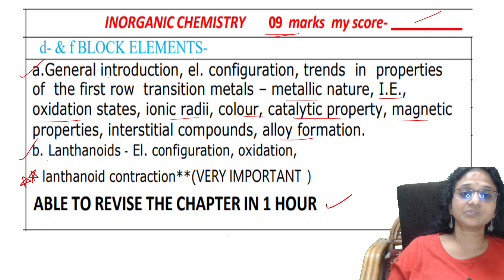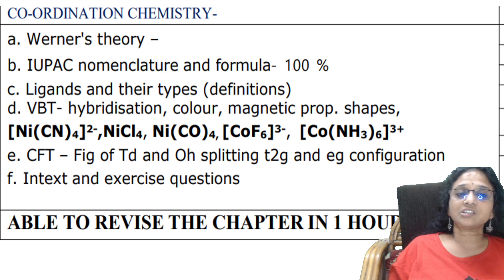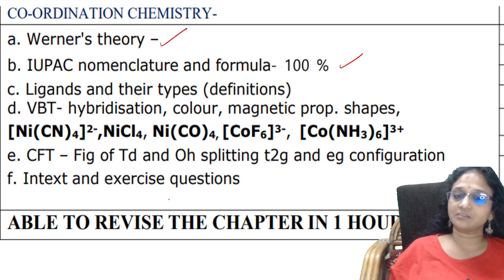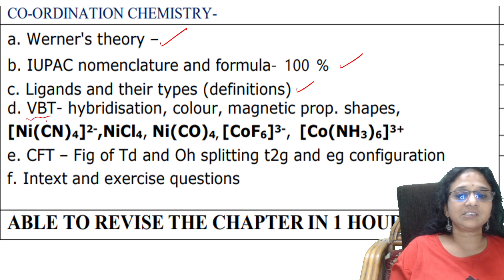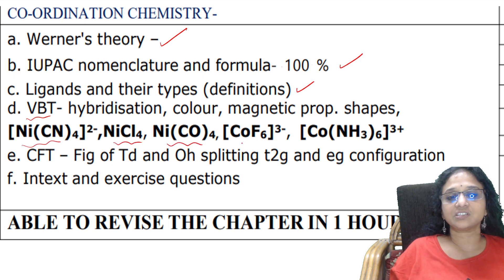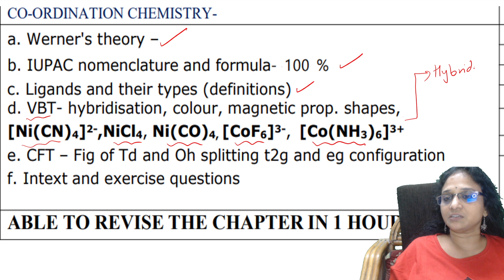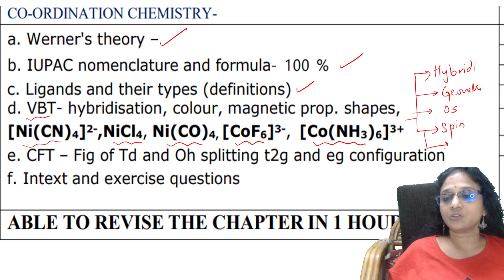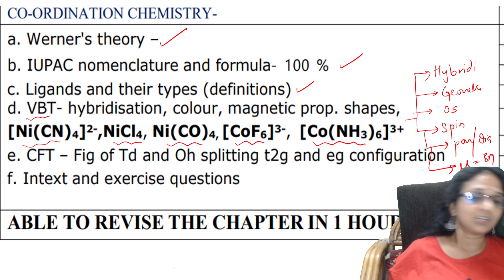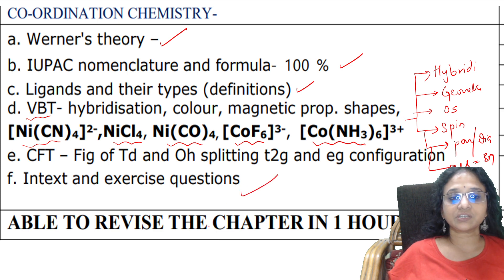Next comes coordination chemistry - very important. IUPAC nomenclature and formula writing is 100% going to come. Werner's theory - be careful. Ligands and their types, definitions - one mark and two marks questions will come. In VBT, learn the given examples carefully - concentrate on hybridization, geometry of the molecule, oxidation state, whether it is outer or inner orbital, high spin or low spin, whether it is paramagnetic or diamagnetic, and calculate the mu value in Bohr magnetons. Complete the chapter in one hour.